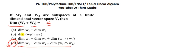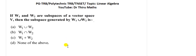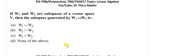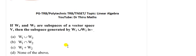Option D. This is the narrative and theorem. This covers the dimension of W1 plus W2 equal to dimension of W1 plus dimension of W2 minus dimension of W1 intersection W2. Now let us discuss one more question.